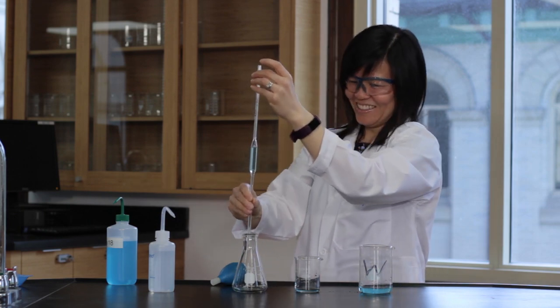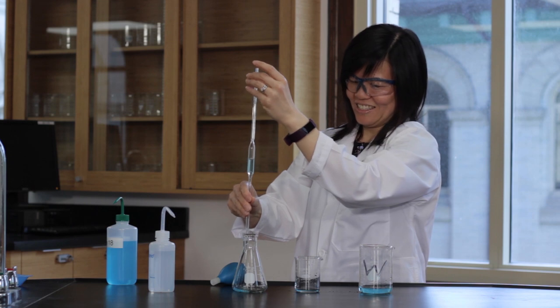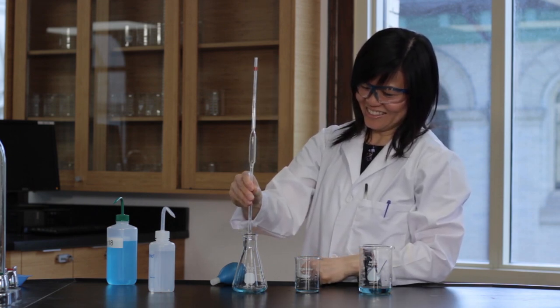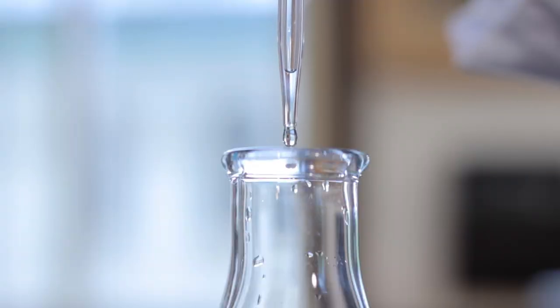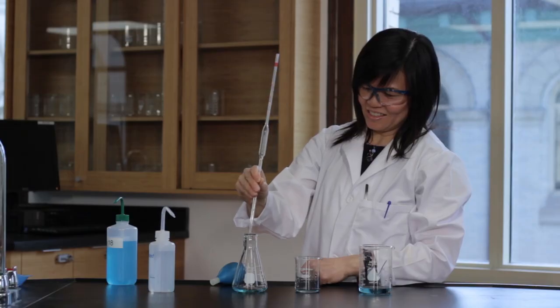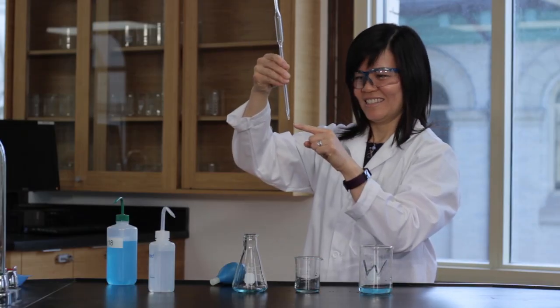Hold the pipette tip against the inside of a clean flask, remove your finger from the stem, and allow the solution to drain by gravity. Touch the pipette tip to the inside of the flask. There will be a small amount of solution left in the pipette tip. Do not blow this out—the pipette has been calibrated to leave this amount undelivered.